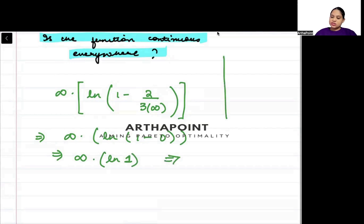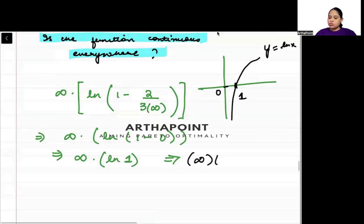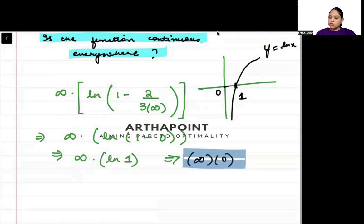So what is the function? y = ln(x). When x is 1, the value of the function is 0. So ln(1) is 0. This gives us infinity × 0, which is an indeterminate form. Infinity × 0 is an indeterminate form.